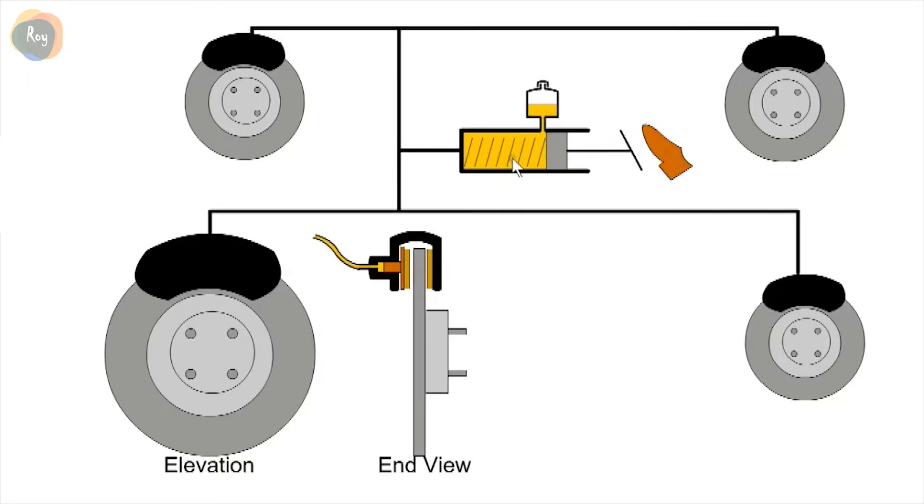Here we see the master cylinder with a reservoir for brake fluid on top. When the pedal is pressed, the piston moves forward and closes off the inlet from the tank. The fluid is then pressurized and activates the slave cylinders.